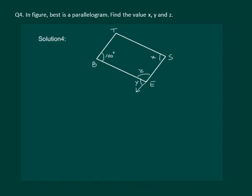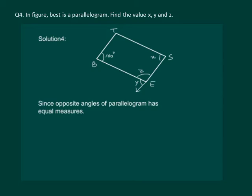We know that opposite angles of a parallelogram are equal. That means angle B must be equal to angle S. So, angle x will be 100 degrees. We can write that angle x is equal to 100 degrees.